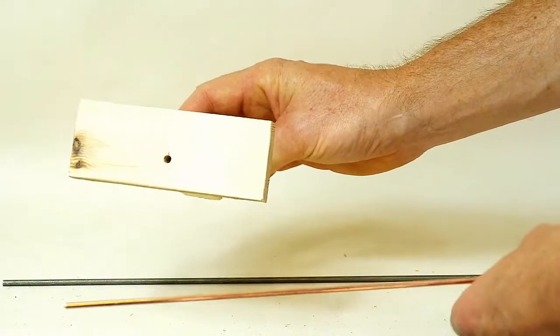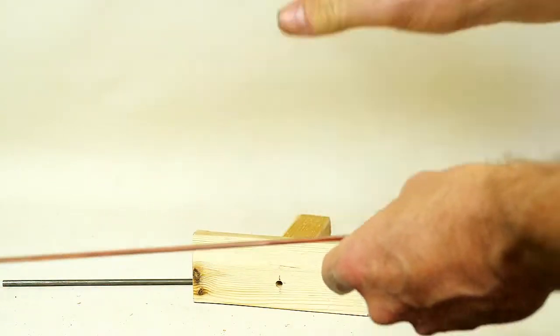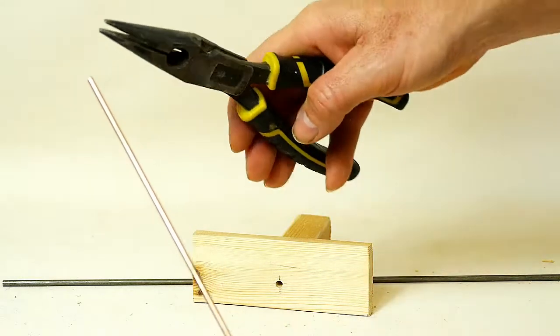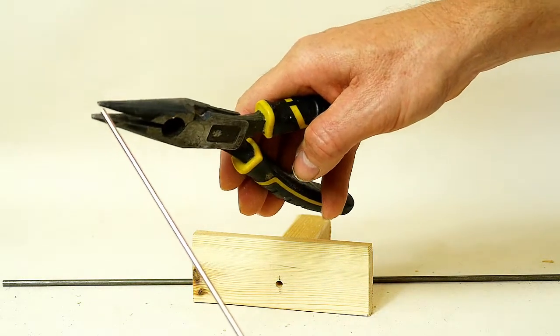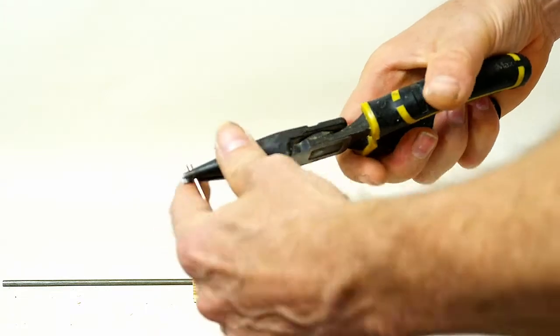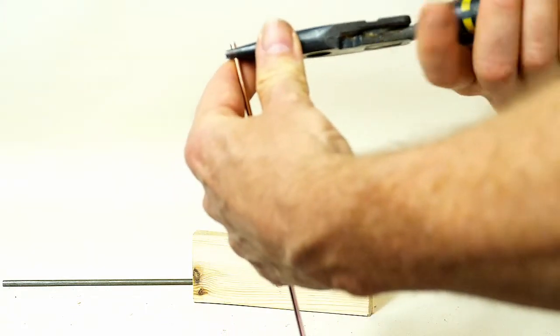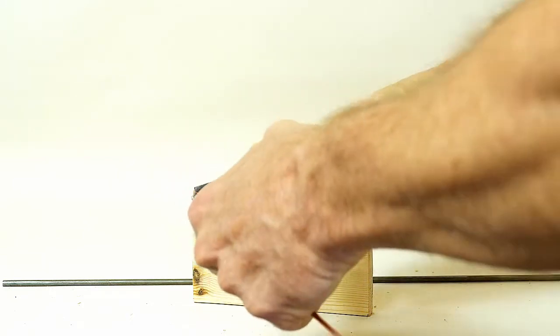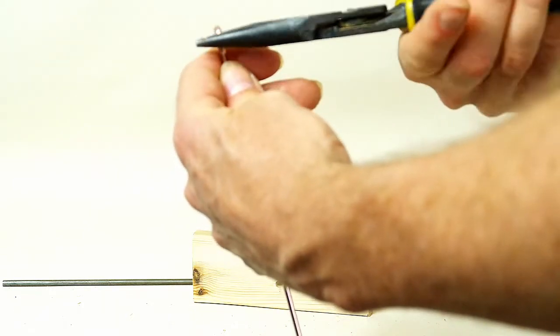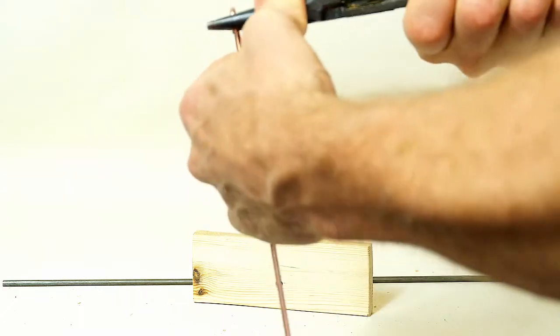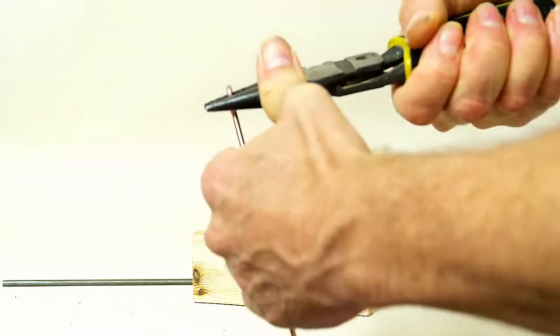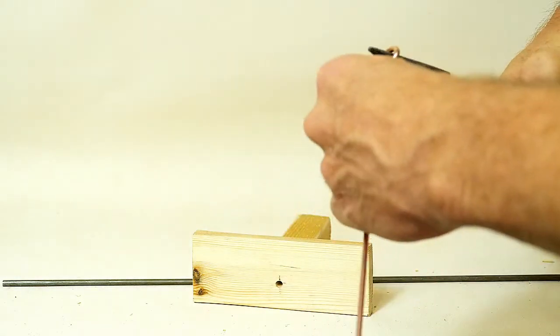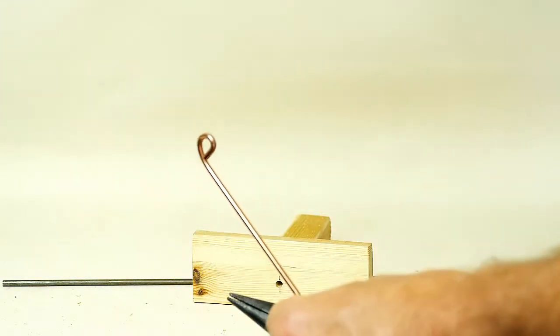Now as I said, I'm going to show you two variations. They're very similar but not exactly the same. But the first thing we want to do is with our rod, we're going to bend a loop, a small loop onto the end. We need a decent pair of pliers, you can even use round nose pliers if you want to get a nice rounded loop. So we've bent on a loop like so.